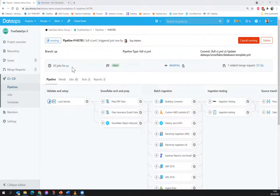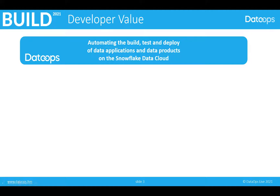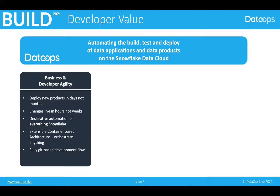So while that's running in the background, let's go back and look at what's going to happen. We are focused on talking about how we build developer value. If we think about our mission to automate the build, test and deploy of data applications and data products on the Snowflake data cloud, we can really put that value into three buckets. The first one is all about agility — how do we deploy completely new products or new applications, maybe a complete new software application, or simply a new analytical output, in days, not months? And once deployed, how do we take requirements from the business and turn around changes into production, having gone through a carefully controlled, governed and managed change process, but still turn those around in hours, not weeks? As part of that, how do we automate the build of everything inside Snowflake declaratively, which is what I'm going to show today?